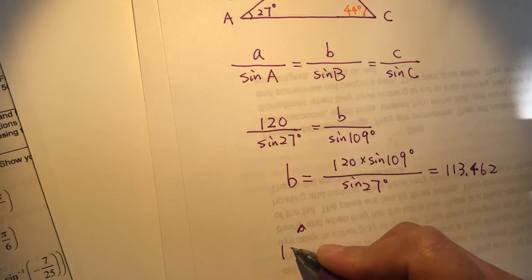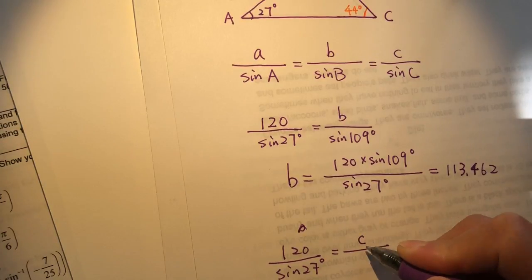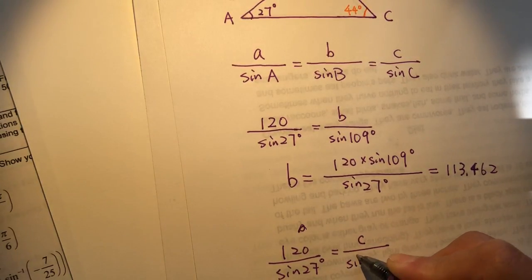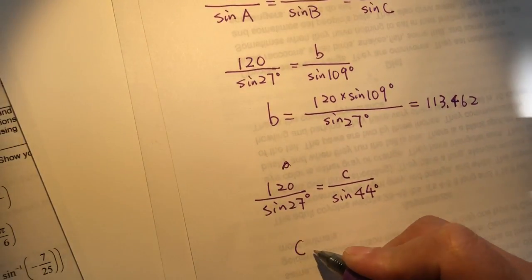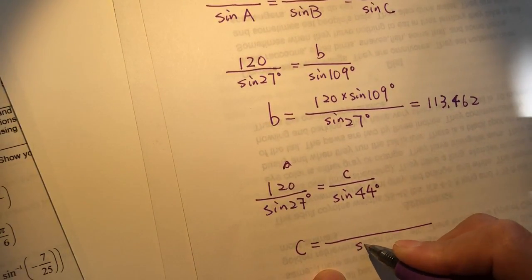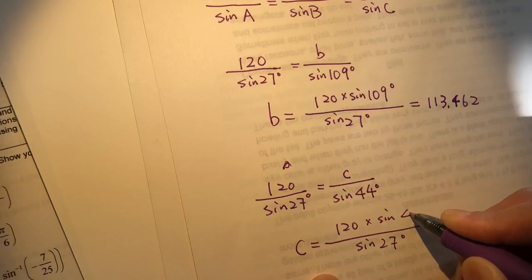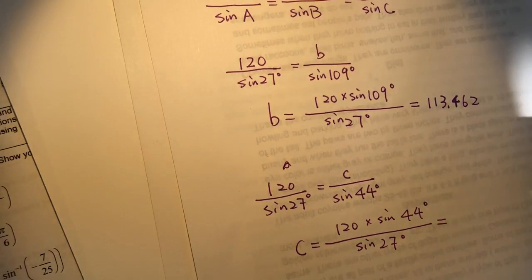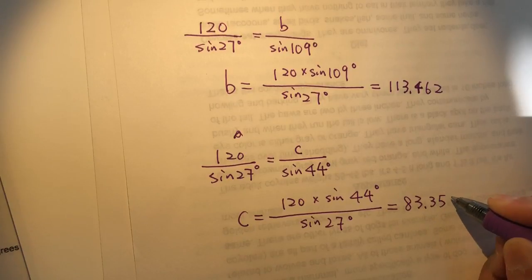Now for side c: 120 over sin 27° equals c over sin C, where C is 44 degrees. So c equals 120 times sin 44° over sin 27°, which equals approximately 83.359.